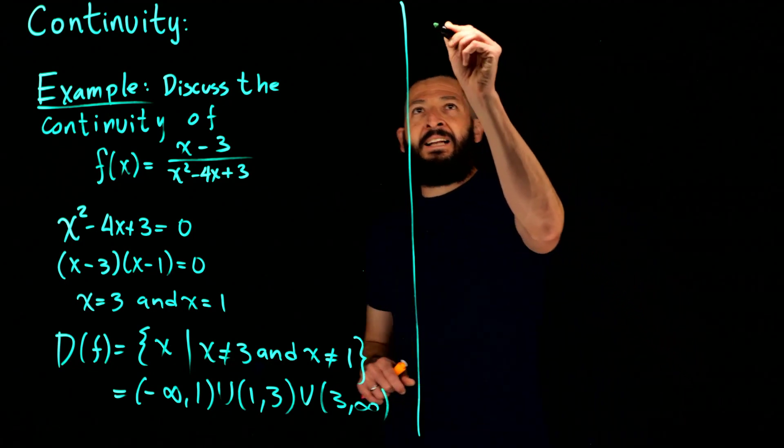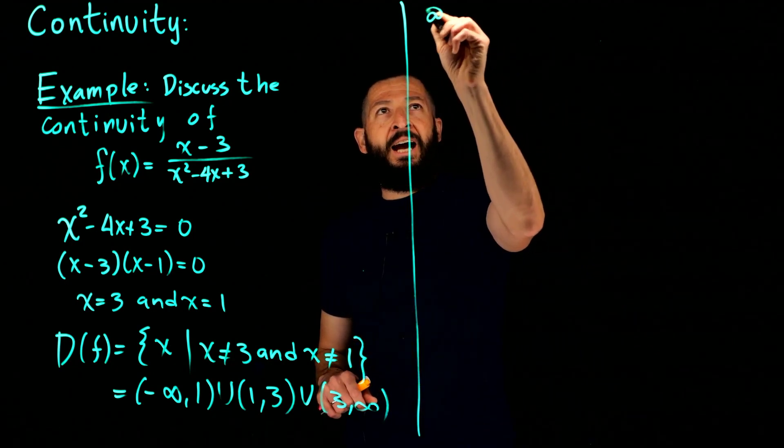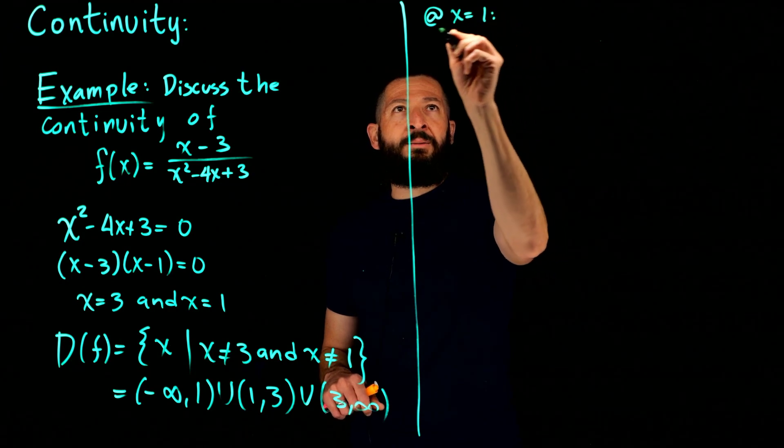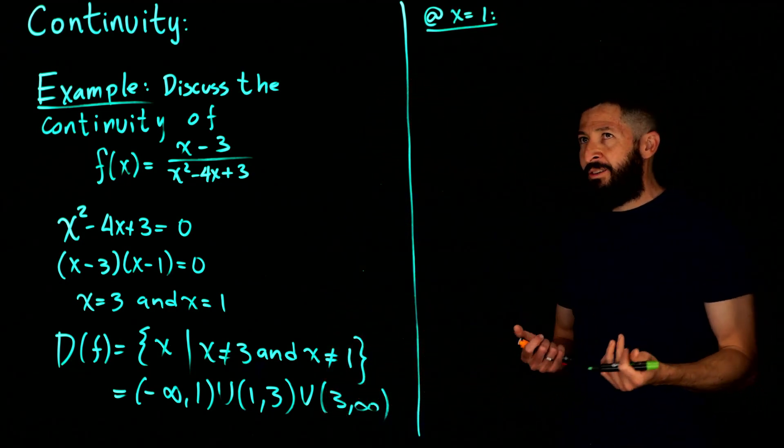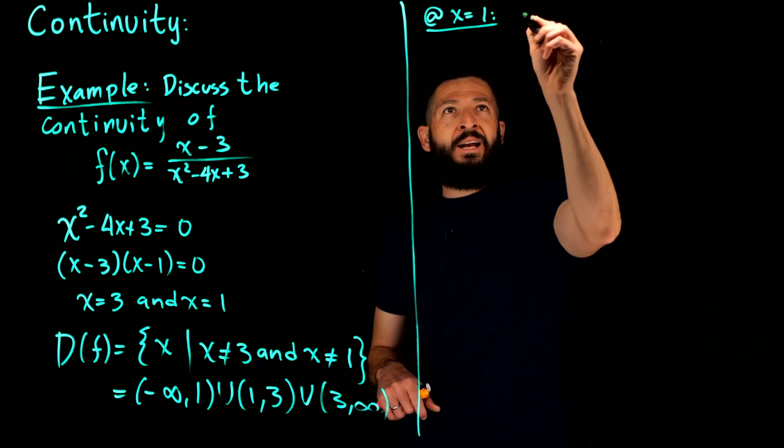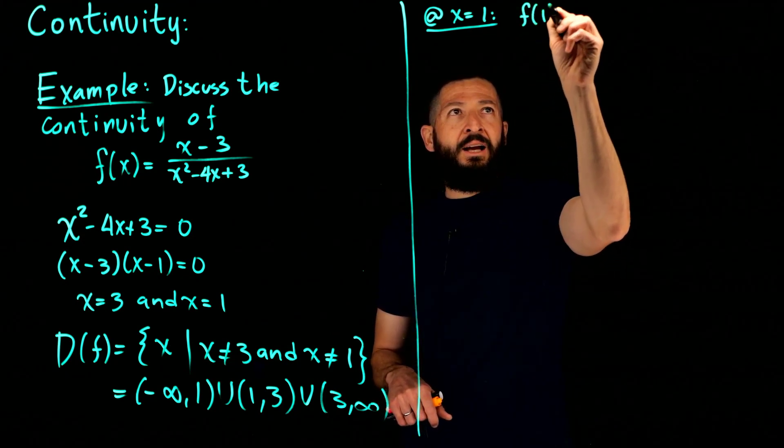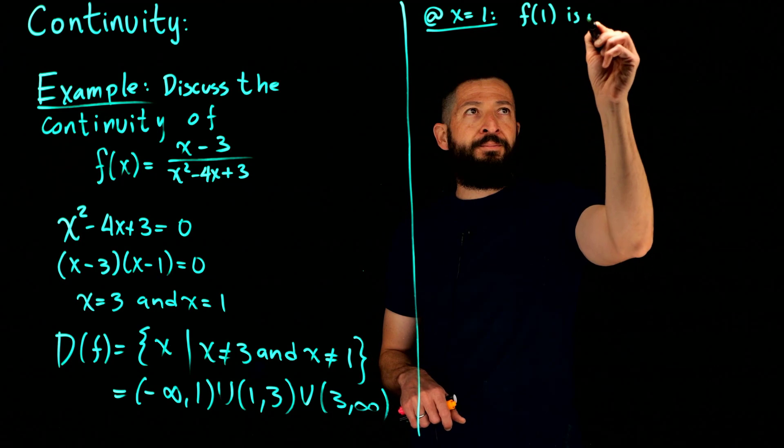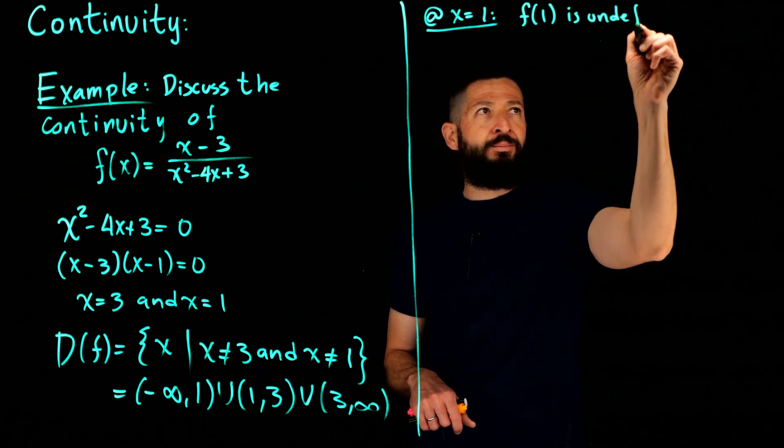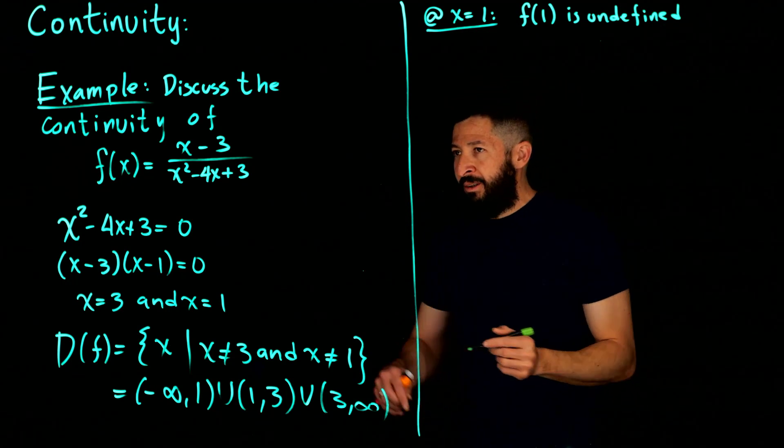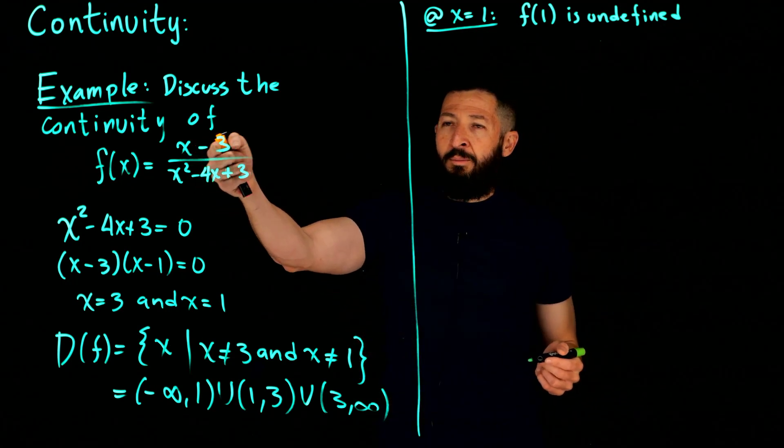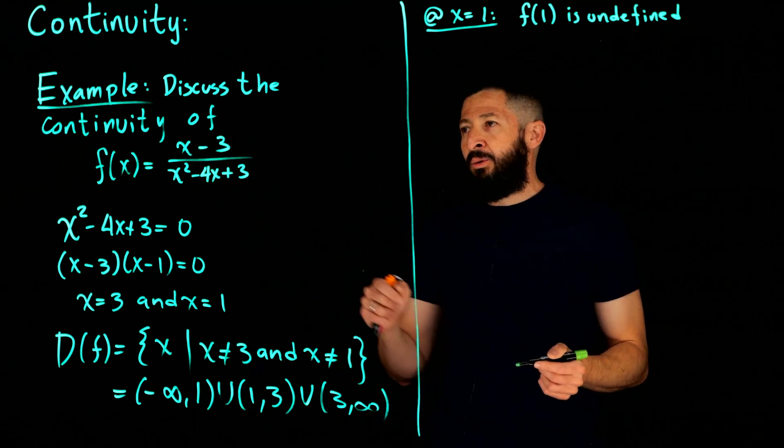So let's analyze the function at x equals to 1. What happens there? So of my three conditions, what is satisfied and what is not? Well, you know that f at 1 is undefined. Why is that? Well, because if you plug 1, you get 1 minus 3, you get negative 2 on the numerator.